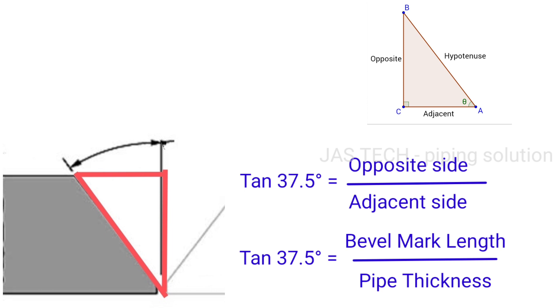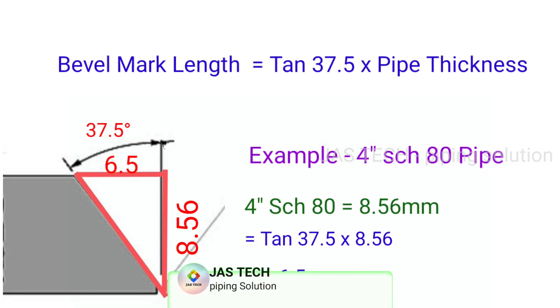opposite side by adjacent side. We know opposite side is bevel mark length, adjacent side is pipe thickness. So bevel mark length